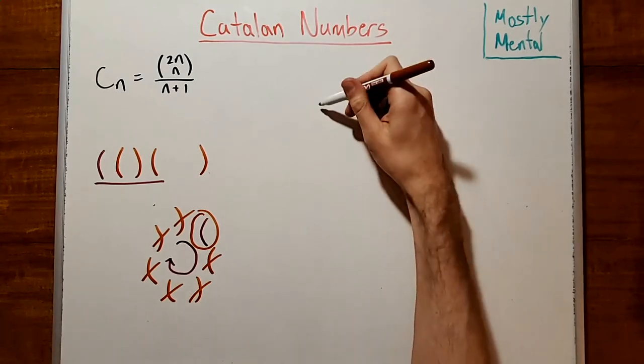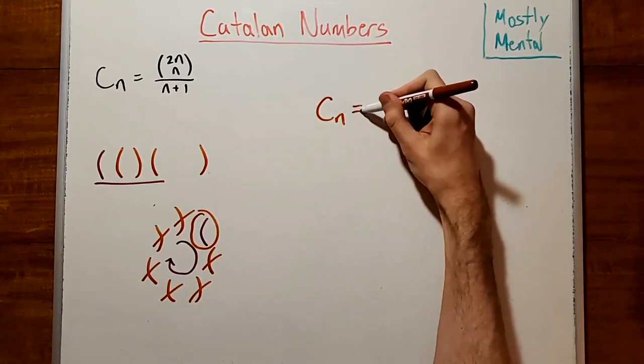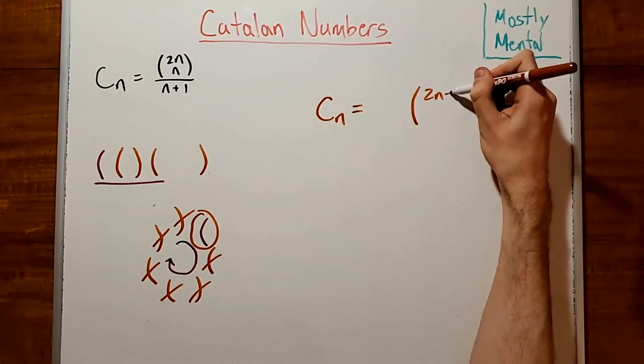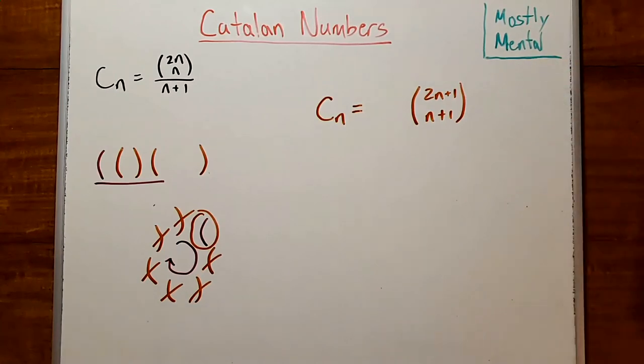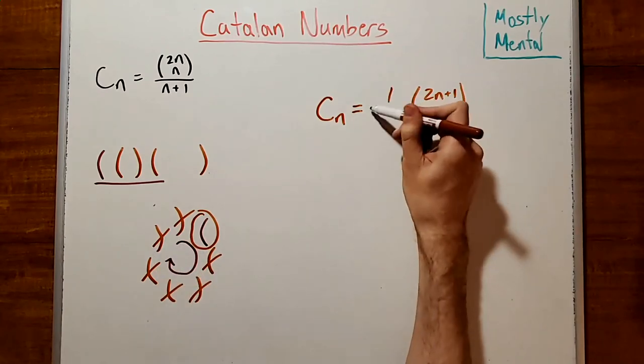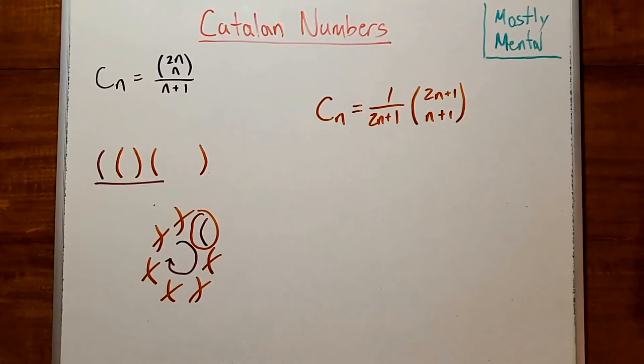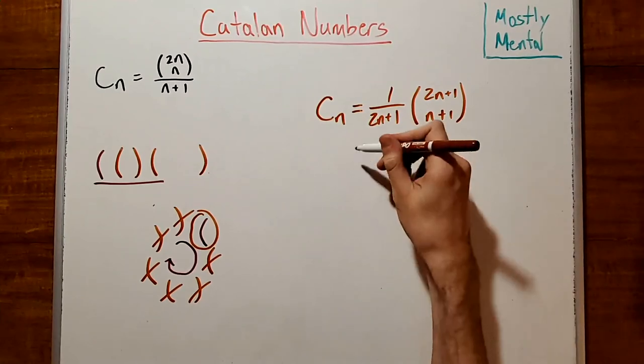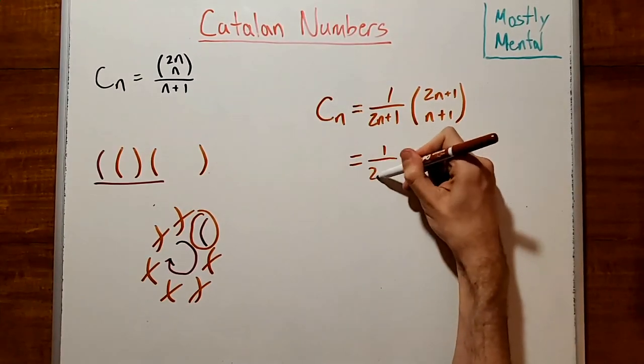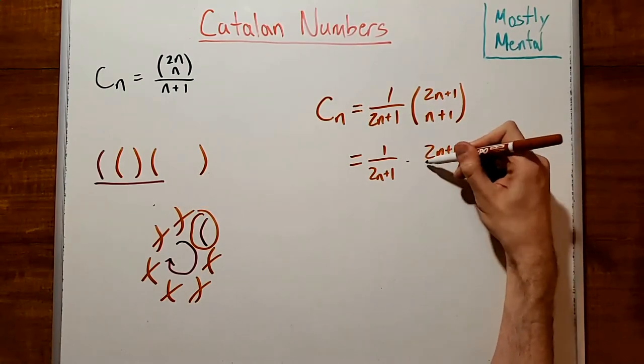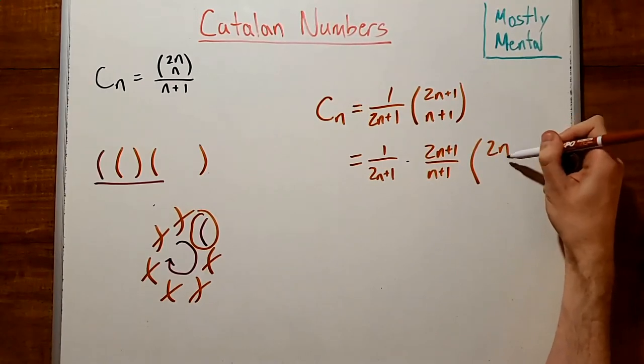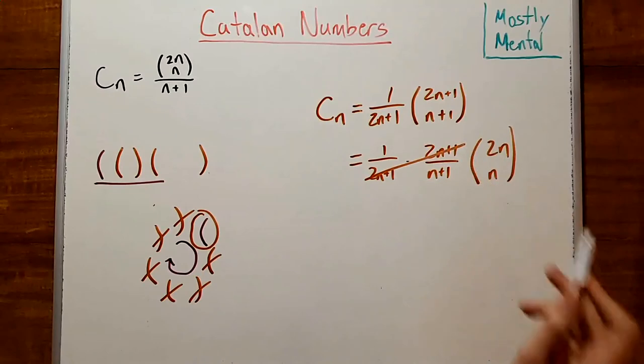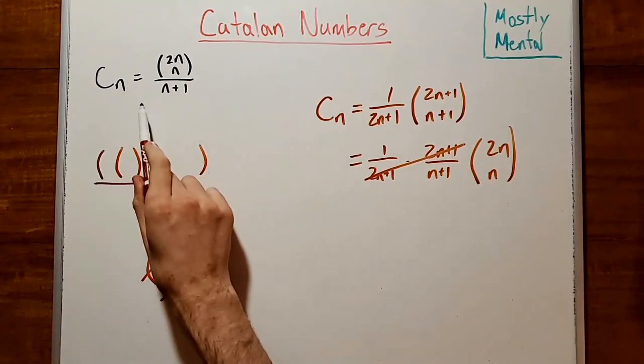And we saw a moment ago there are C sub n dominated strings and a total of 2n plus 1 choose n plus 1 strings with n plus 1 open parens and n close parens. And of those, one out of every 2n plus 1 starts in the right position in this cyclic order to be a dominated string. And then by the absorption identity, which we saw a few videos back, we get that this is 1 over 2n plus 1 times 2n plus 1 over n plus 1 times 2n choose n, and then these cancel and we're left with the identity we were trying to prove.